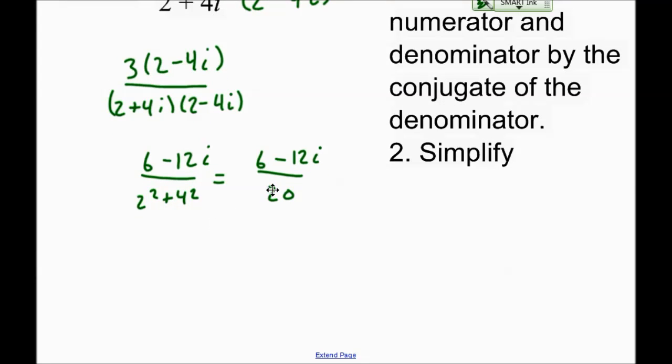Now, in order to be completely finished, we're going to write this in the form a plus bi. So here's what we're going to do. We're going to split this into two fractions, 6 over 20. And we're going to subtract 12i over 20. Then, just simplify each fraction. So I know I can take a 2 out of this. So that's 3 tenths minus. This one, I'm going to take out a 4. So that's 3i over 5.